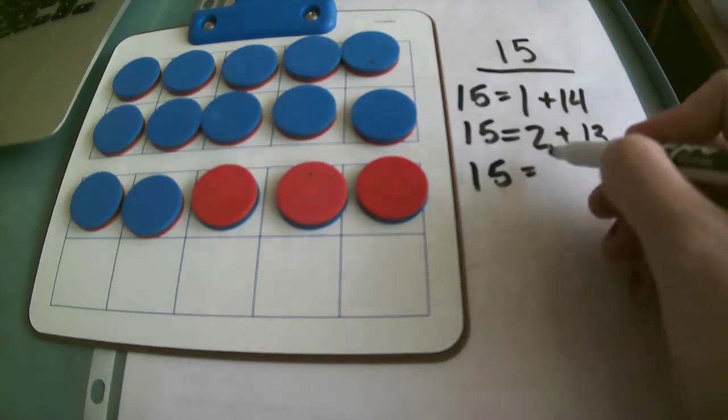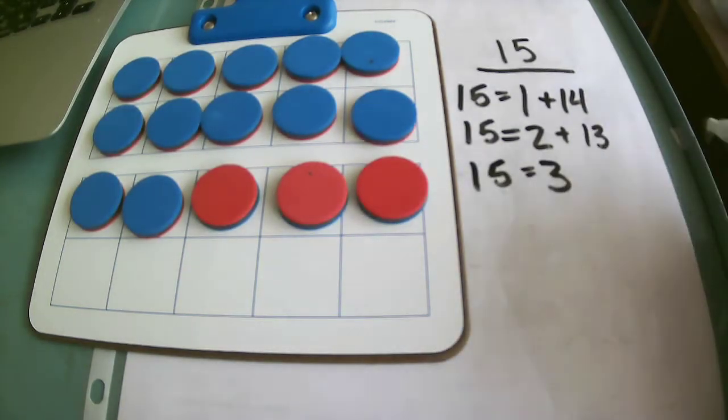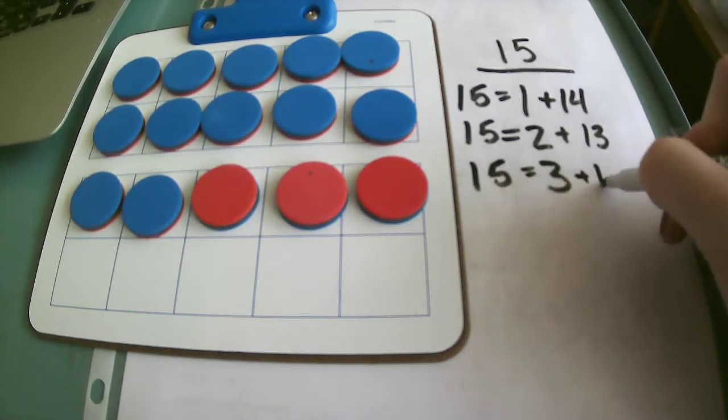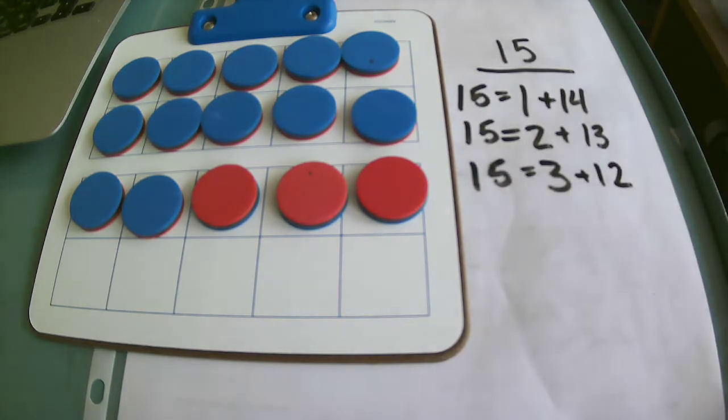This time I have 3 reds and I have 12 blues, because I know that 3 and 12 together are going to give me 15.